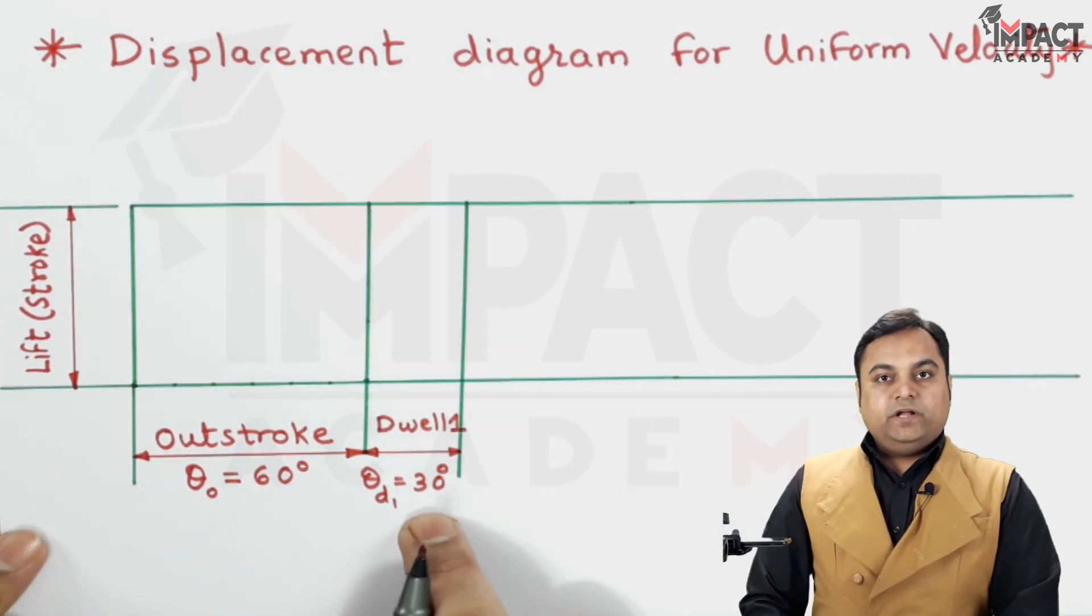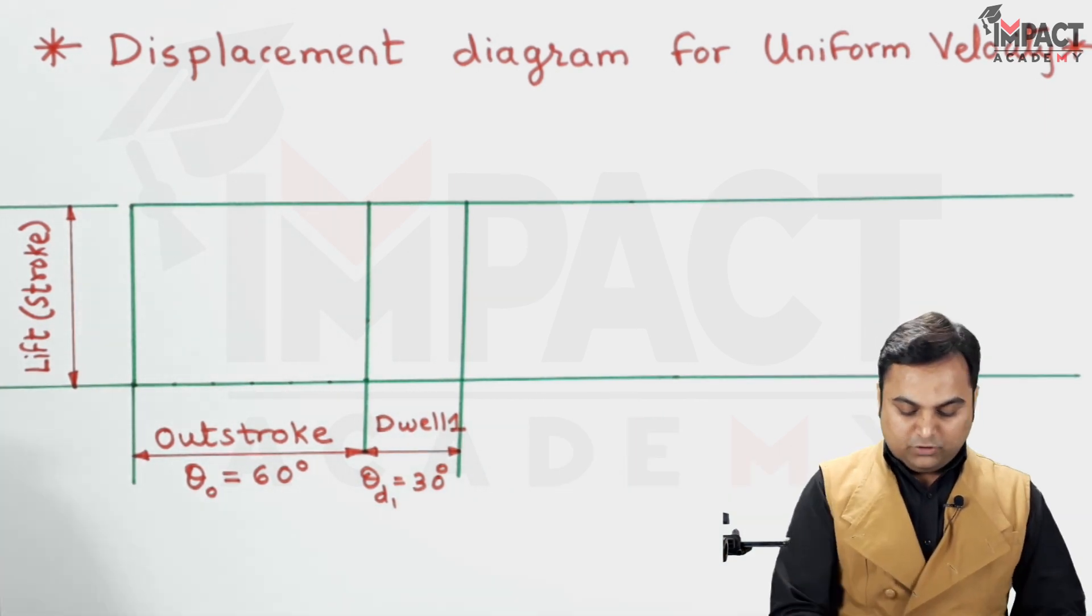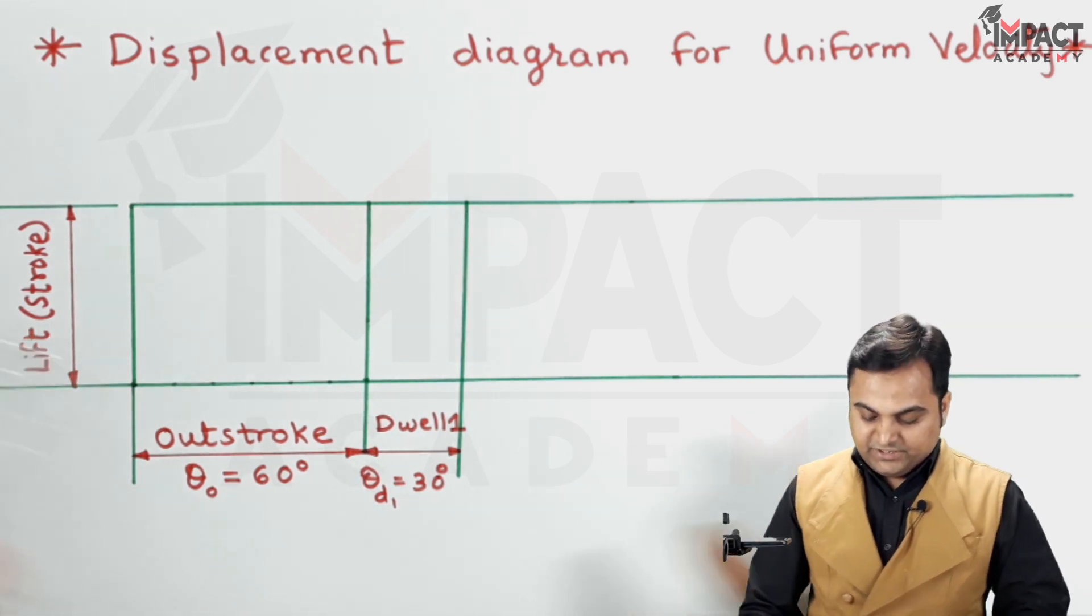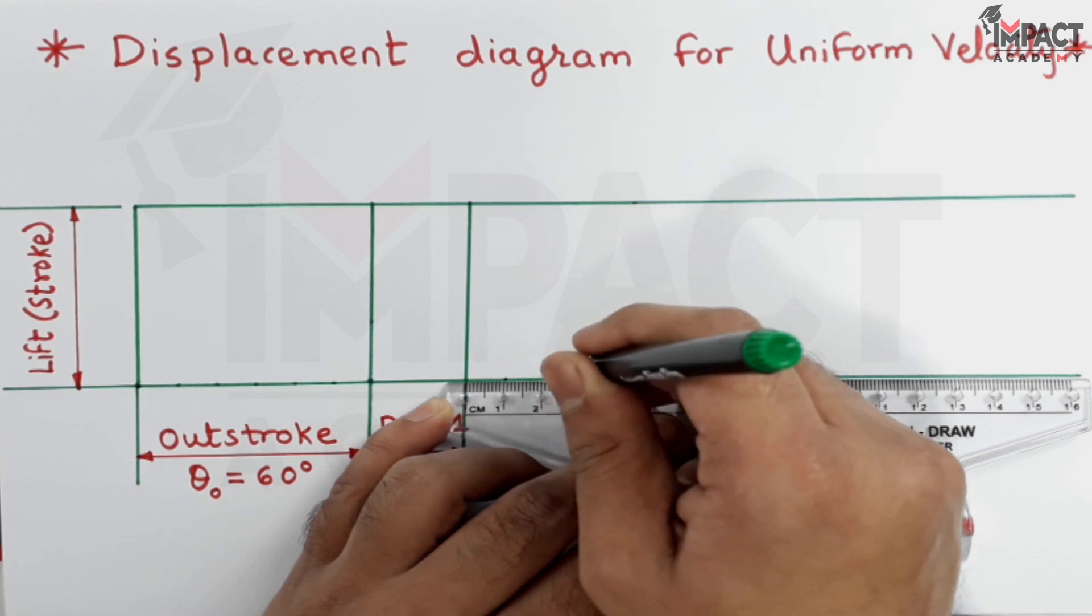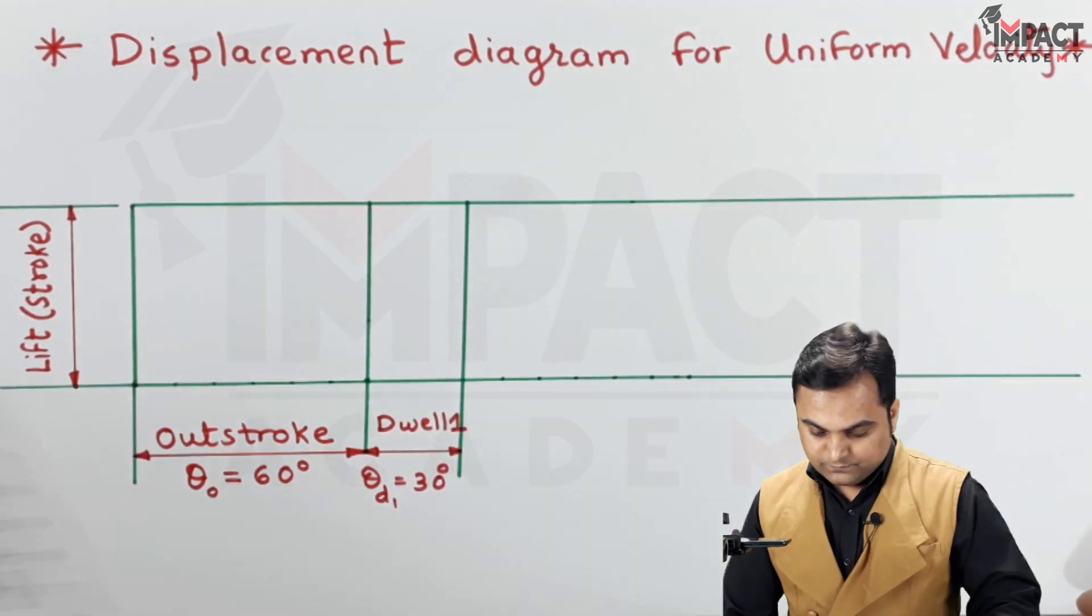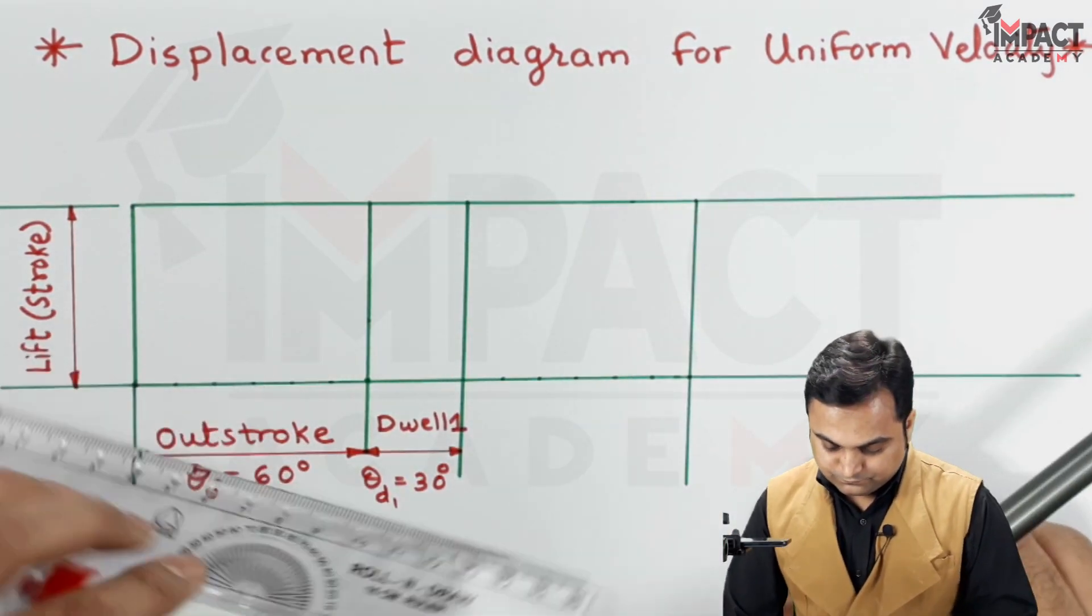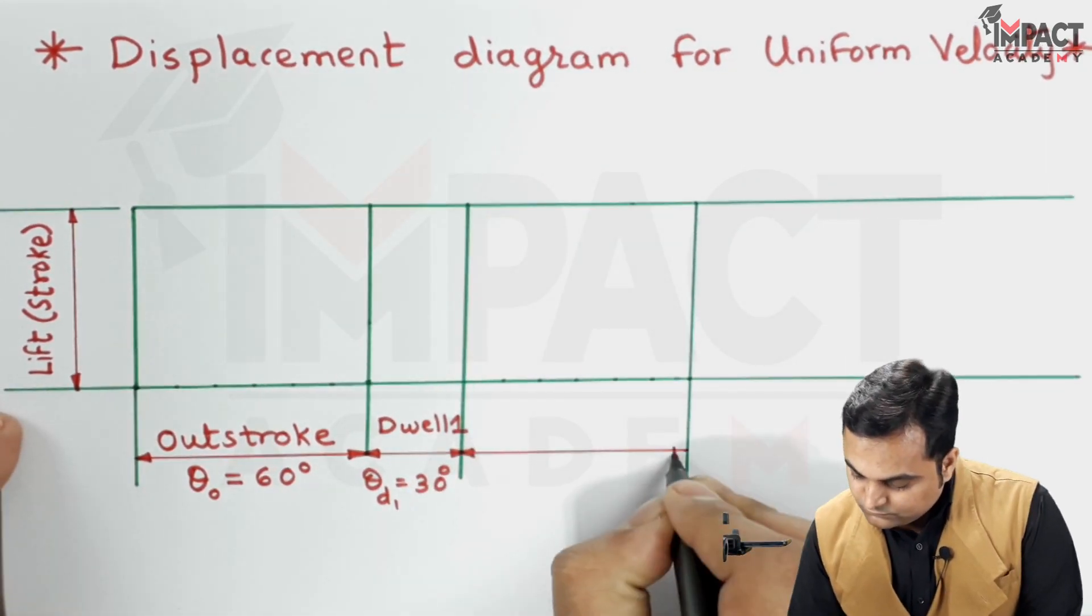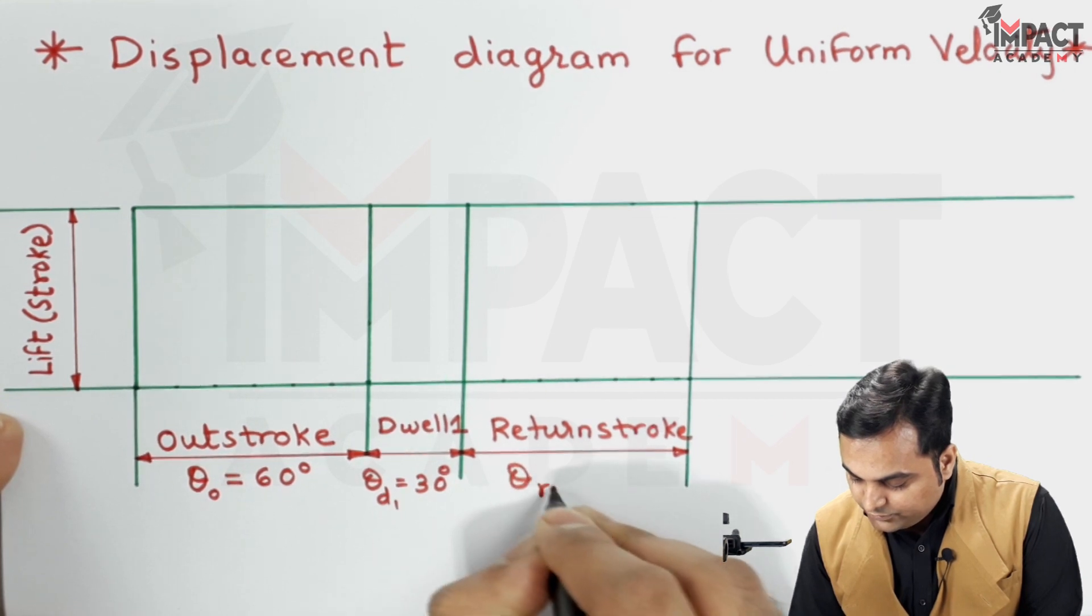Then after dwell 1 there would be the return stroke, and here also I am assuming that the return stroke is of 60 degrees, and again dividing that return stroke into 6 equal parts, denoted by theta r.